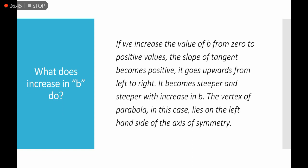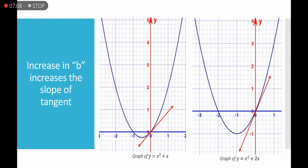If we increase the value of b from 0 to positive values, the slope of the tangent becomes positive — it goes upward from left to right and becomes steeper with increasing b. The vertex of the parabola lies on the left-hand side of the axis of symmetry. For example, y = x² + x has b = 1, while y = x² + 2x has b = 2. Increasing b increases the slope of the tangent at the y-intercept.